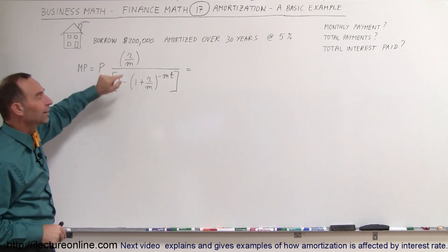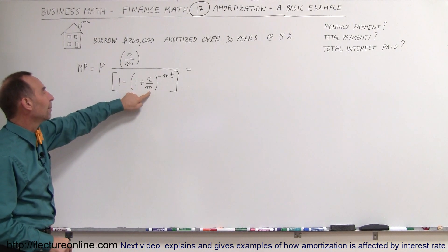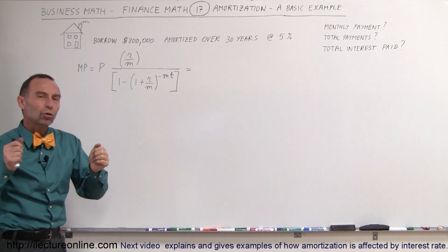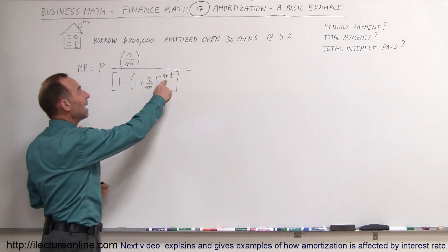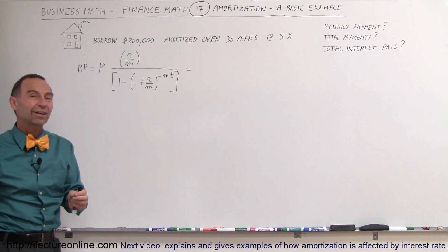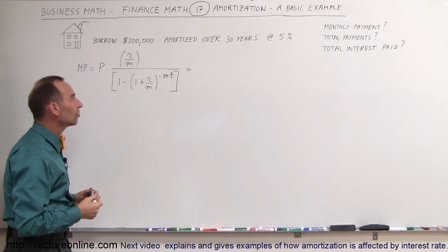So M would be 12 because we're making monthly payments. And so divided by 1 minus the quantity, 1 plus the rate divided by 12, raised to the minus M times T. M times T is the total number of payments you're going to make. M is 12 and T would in this case be 30. 12 times 30 is 360, which means that would be 360 equal payments over the 30 years.